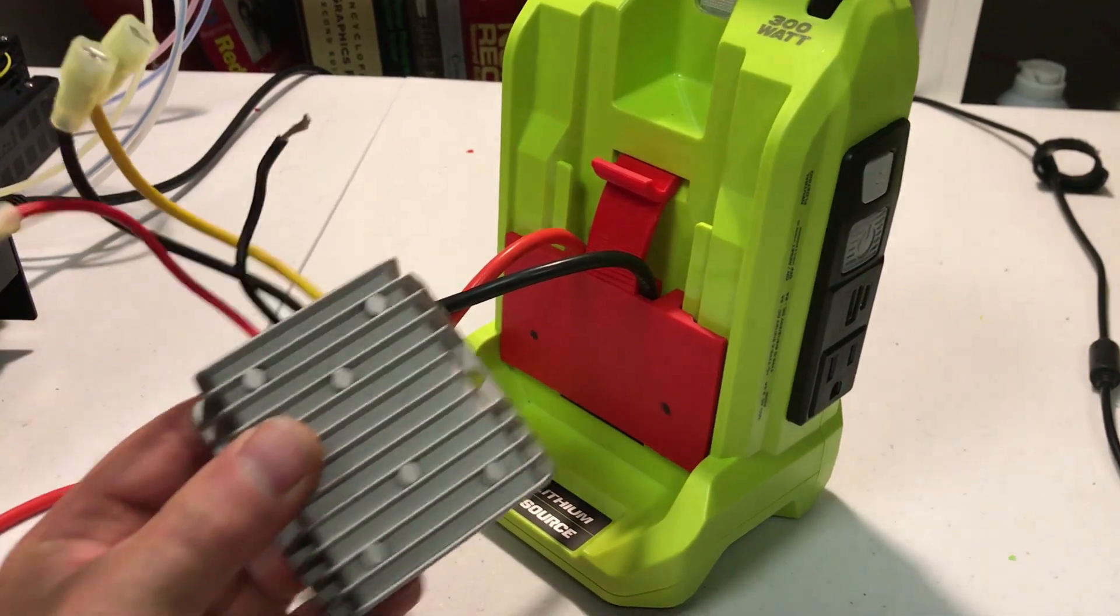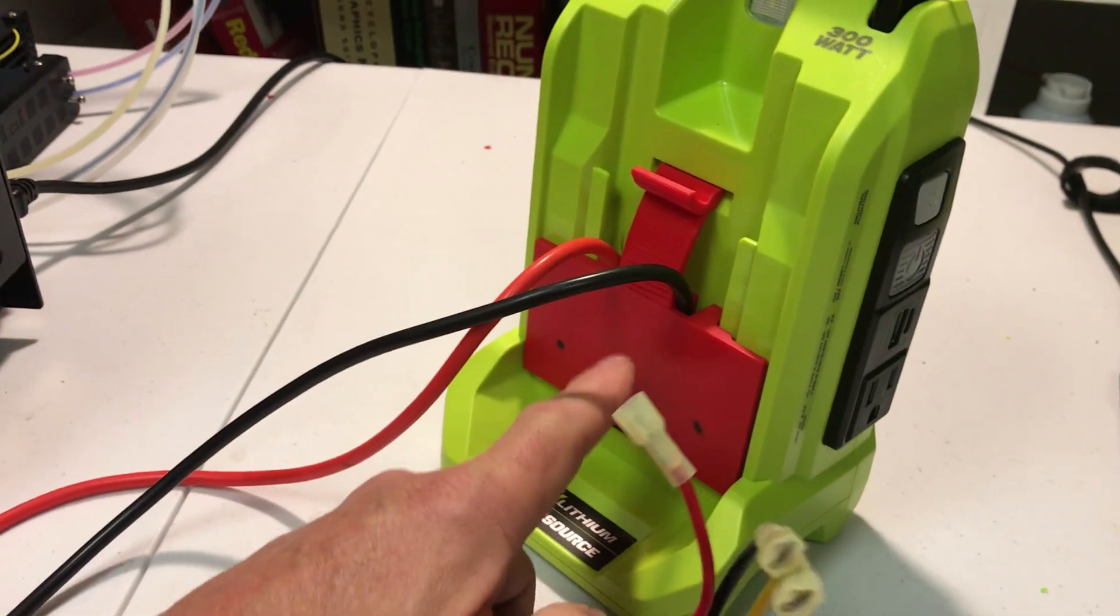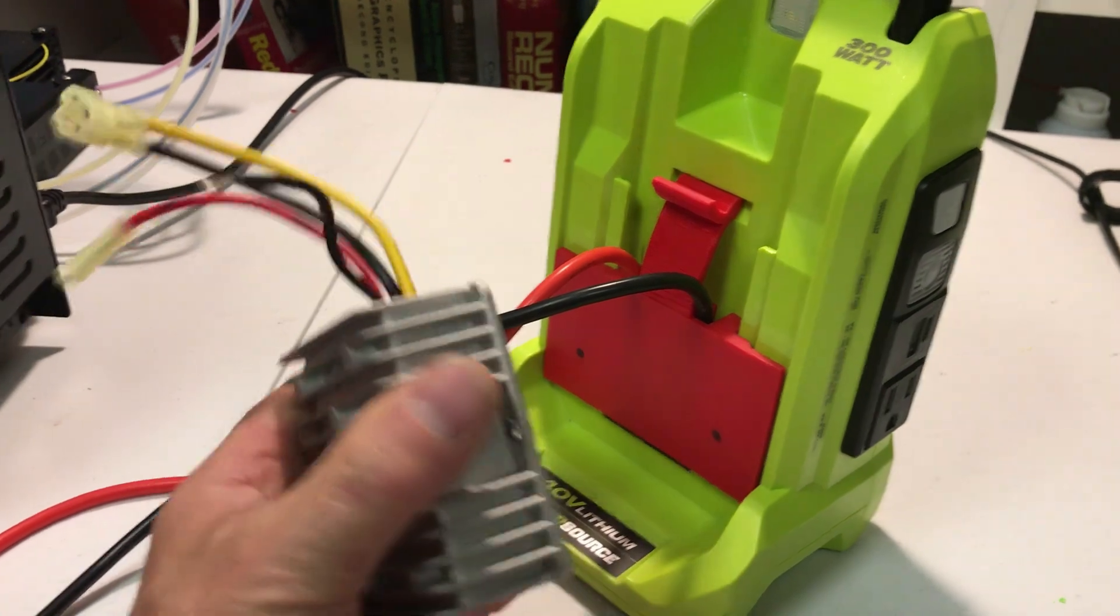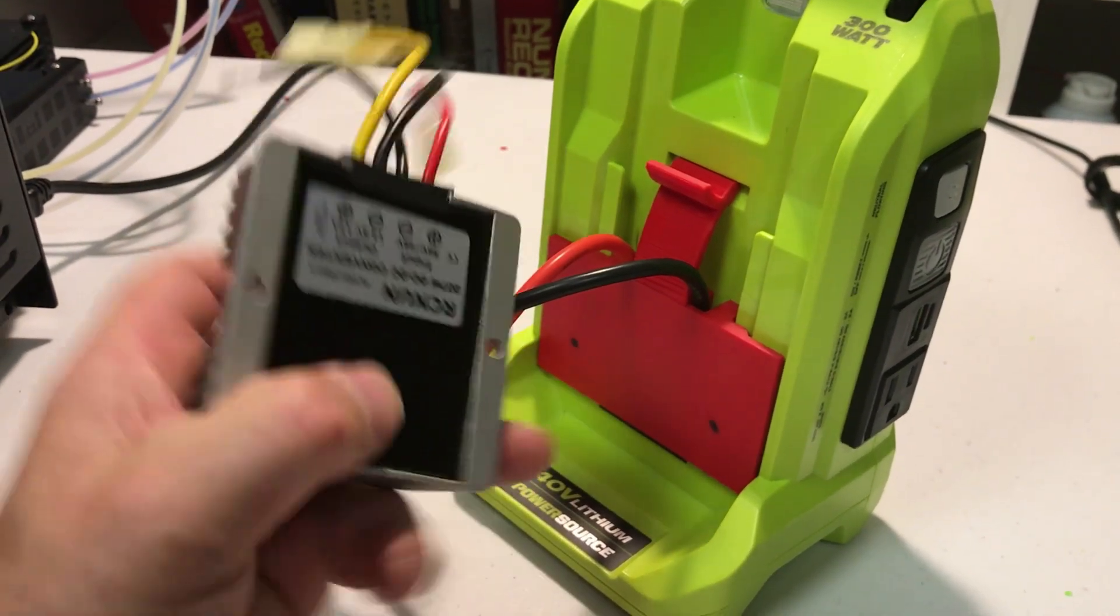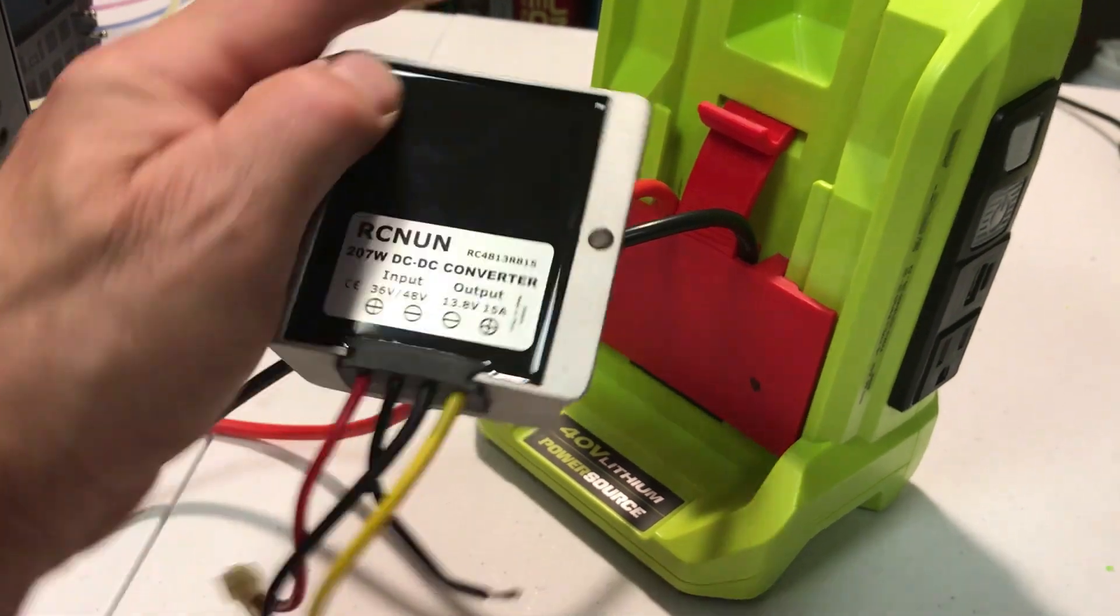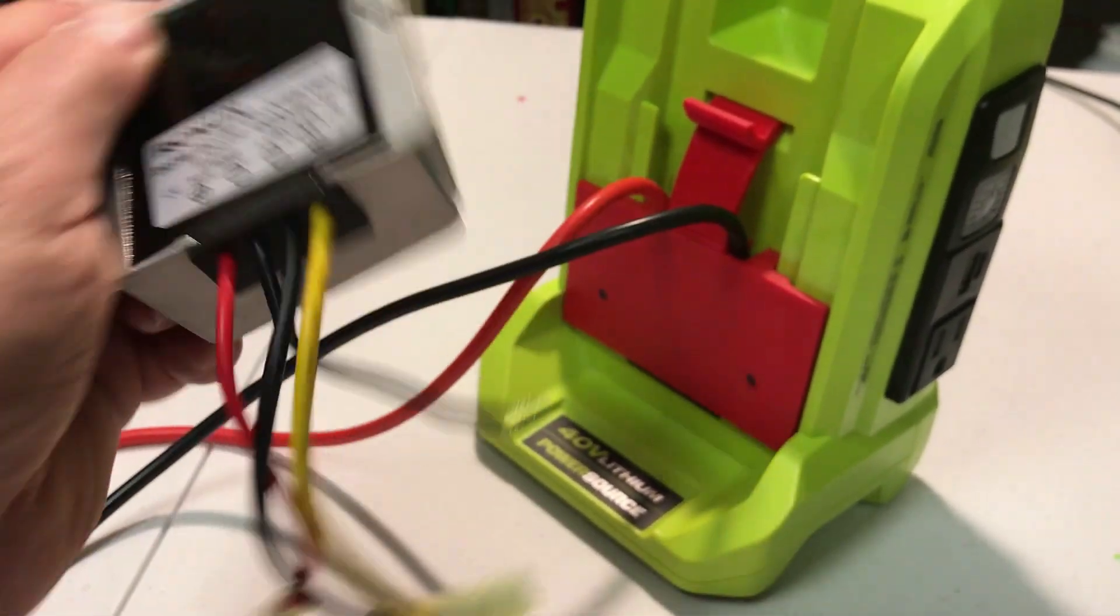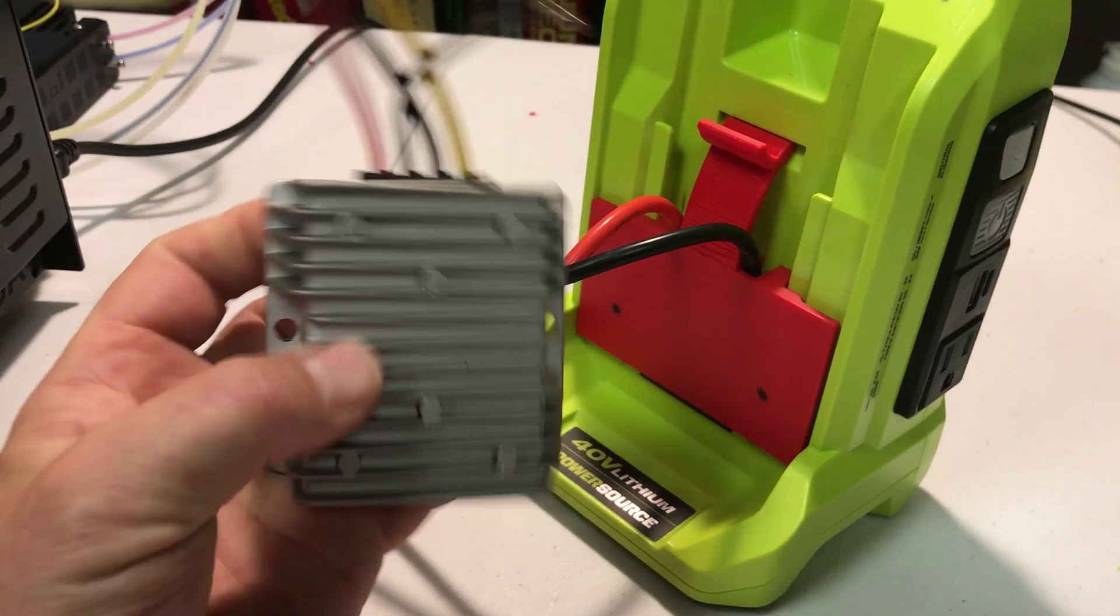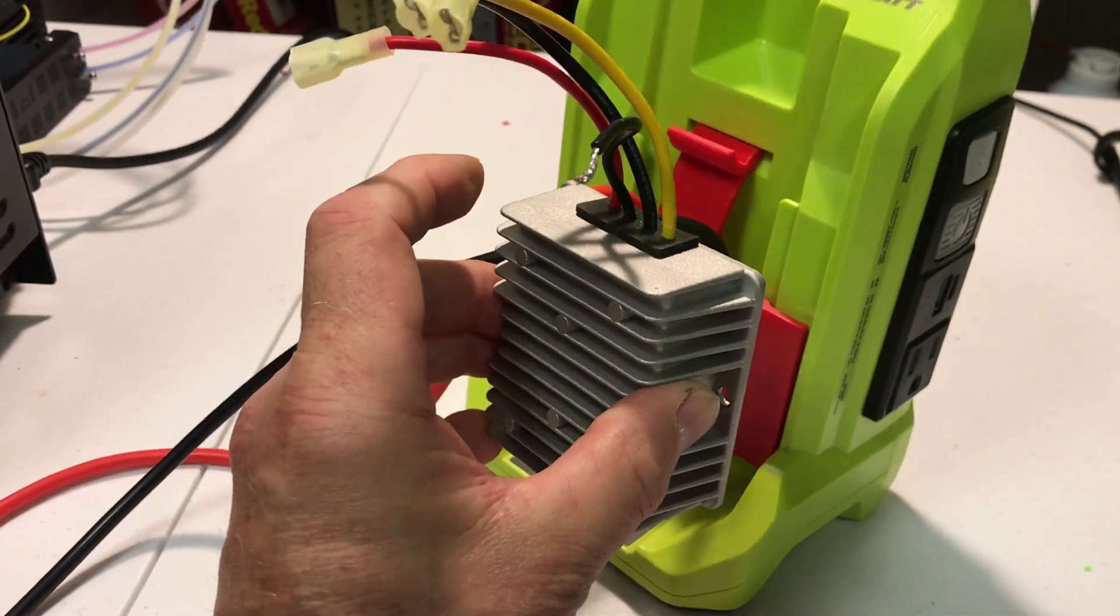My current idea is that I'm going to take this existing adapter that I did and I'm going to try to add on to it a DC to DC converter that takes the higher voltage and drops it down to 13.8, and I'm going to try to mount this on here somehow.